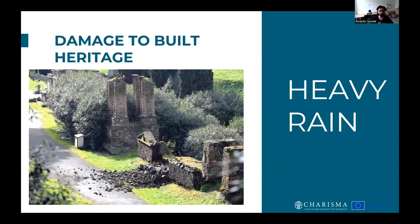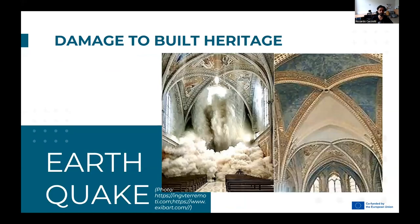Here we see the collapse of masonry walls at the archaeological site of Pompeii due to heavy rains. Moving on to a different type of disaster, not necessarily connected to climate change but showing the fragility of heritage: due to earthquake, we have the collapse of the vault in the Basilica of Saint Francis in Assisi.